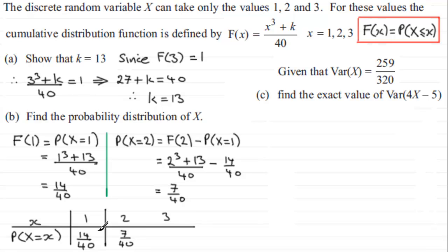Now we know that all the probabilities should total 1. So 14 40ths and 7 40ths is a total of 21 40ths. And so that leaves us with 19 40ths to make that up to 1 whole 1. And there's our probability distribution of our random variable X.